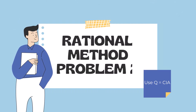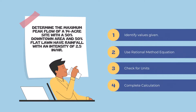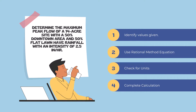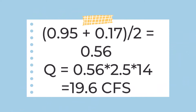For the second example, determine the maximum peak flow of a 14-acre site with a 50% downtown area and a 50% flat lawn area, with a rainfall intensity of 2.5 inches per hour. Because this area is split and does not have one kind of land use, we need to determine an average runoff coefficient. For the maximum peak flow, we use 0.95 for the downtown area and 0.17 for the flat lawn. Averaging those equally gives a runoff coefficient of 0.56. Using Q equals CIA: 0.56 times 2.5 times 14 acres gives us a peak flow of 19.6 CFS.